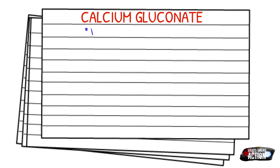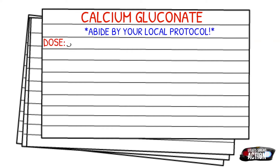As always, before we get into dosages, please abide by your local protocol and stay within your scope of practice. The adult dose is 500 milligrams to 1 gram, which is 5 to 10 milliliters — so 1 milliliter equals 100 milligrams. Your pediatric dose is 60 milligrams per kilogram, or 0.6 milliliters per kilogram.